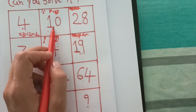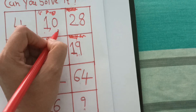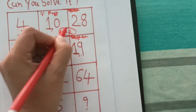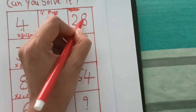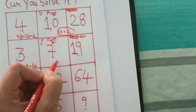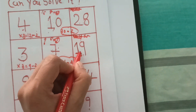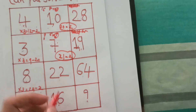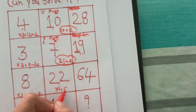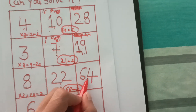10 times 3 is 30. 10 times 2 is not possible. Then 10 times 3 is 30 minus 2, so we get 28. Here 7 times 3 is 21, and 21 minus 2, so we get 19. Here 22 times 3 is 66 minus 2, so we get 64.